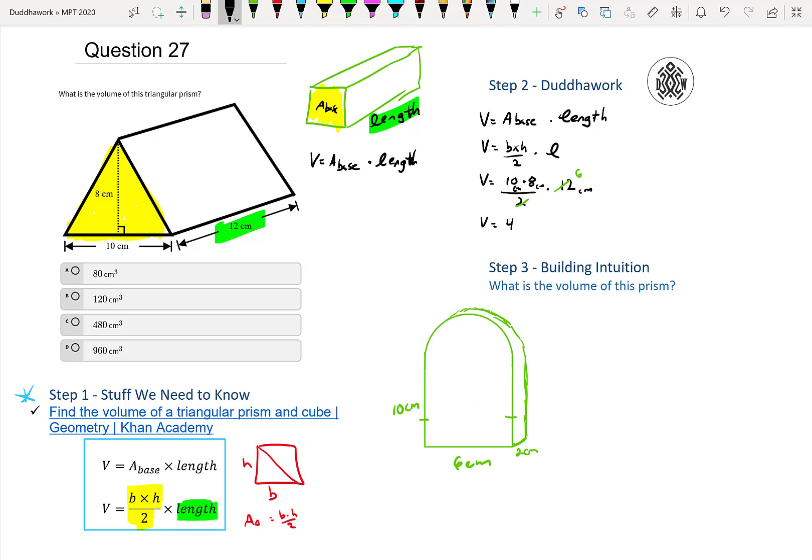My bad. So that's going to be 480 centimeters cubed. And the way I realized I was wrong there, that I did 8 times 6 wrong, is that 240 wasn't in the multiple choice. So it's 480 centimeters cubed.